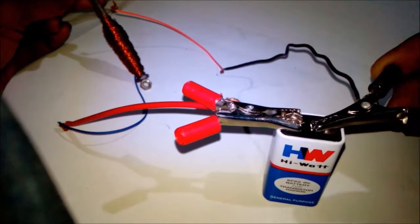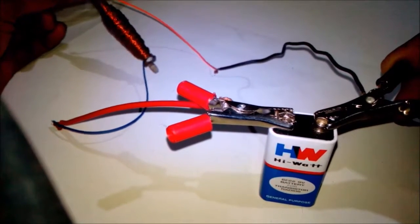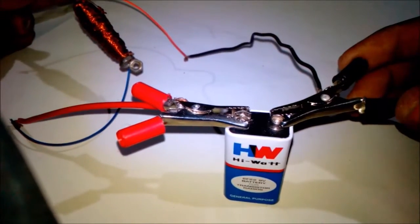It means an electromagnet, when electricity is passed, becomes like a magnet. And when electricity is disconnected, it loses its magnetic property.